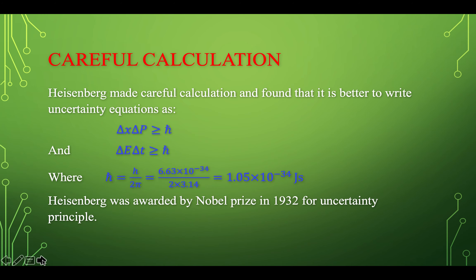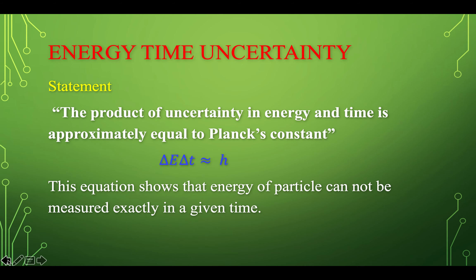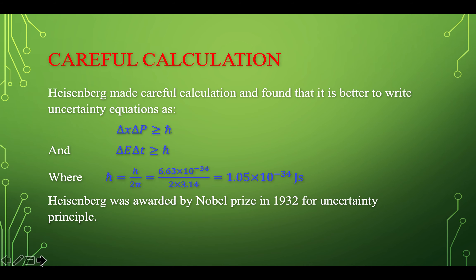In more careful calculations, Heisenberg stated that it is better to write the uncertainty equations as: delta X times delta P is greater than or equal to h-bar, and delta E times delta T is greater than or equal to h-bar.